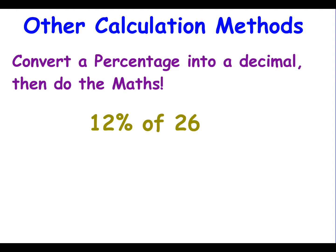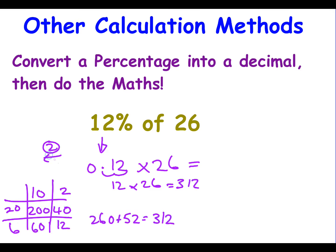The other way to do these calculations is to convert a percentage into a decimal and then do the maths. We generally recommend the 10% rule for the non-calculator method. But with a calculator, you might see that 12% is the decimal 0.12 and then multiply it by 26. It's easy on a calculator, but the 10% rule is easy without one. For example, 12% of 26 is 3.12.